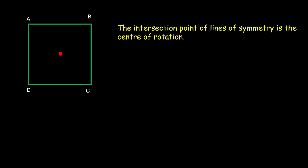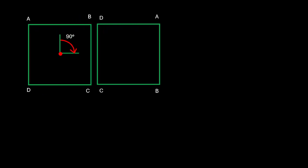Now let us rotate the square clockwise by 90 degrees. If we do that, it will look like this. The side which was here after rotation has come over here. Ignore the vertices for once and just look at the squares — you will see that they are identical. They look exactly the same.